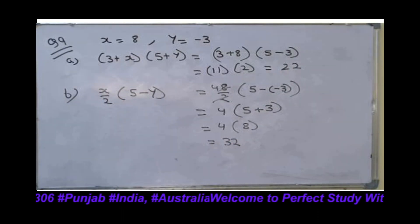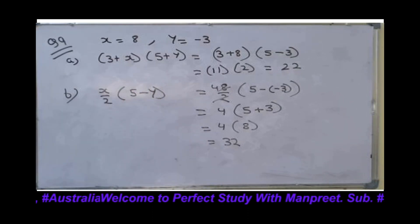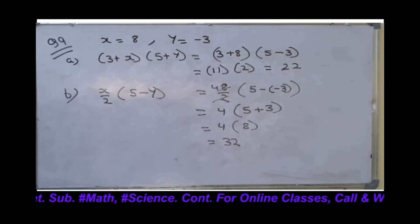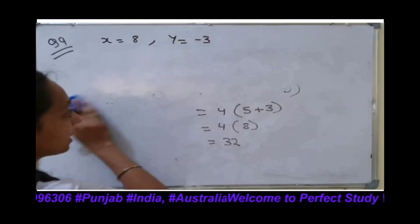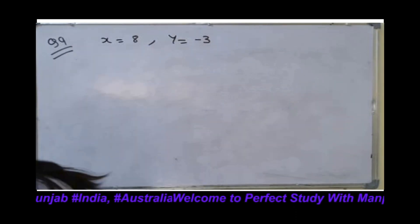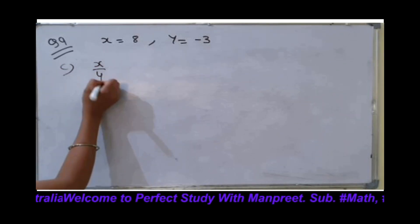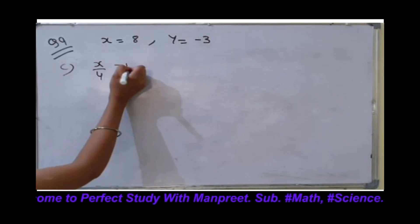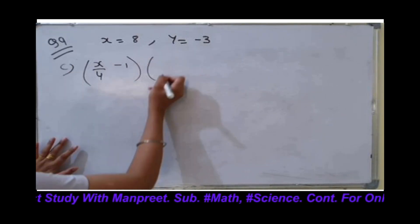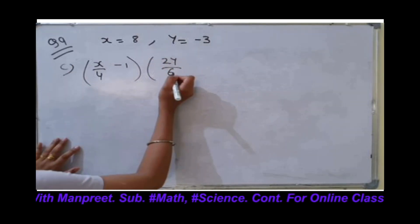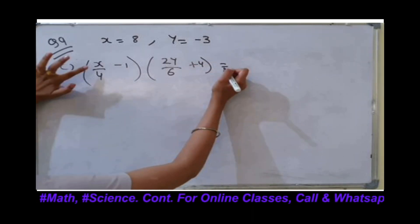The answer is 32. Next, let's do the C part. C part statement is: x divided by 4 minus (1/2)(y divided by 6 plus 4). Again we have to first put values.